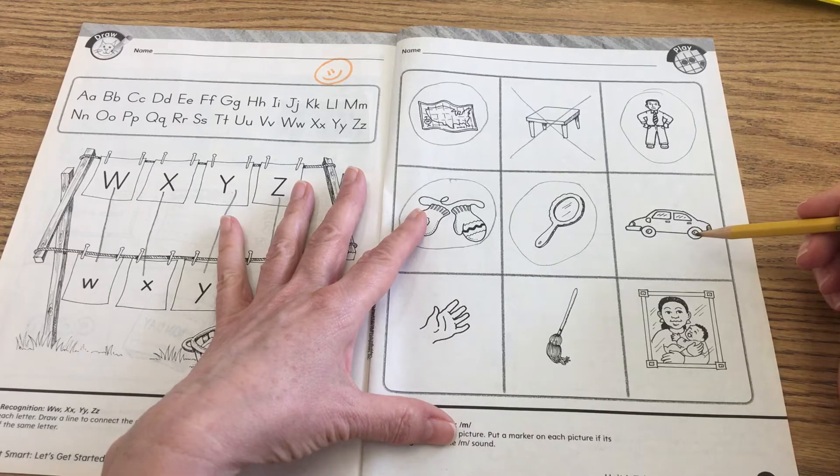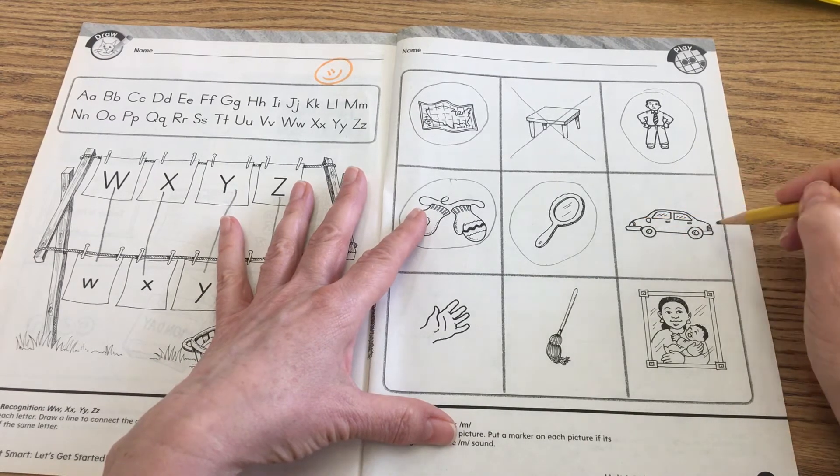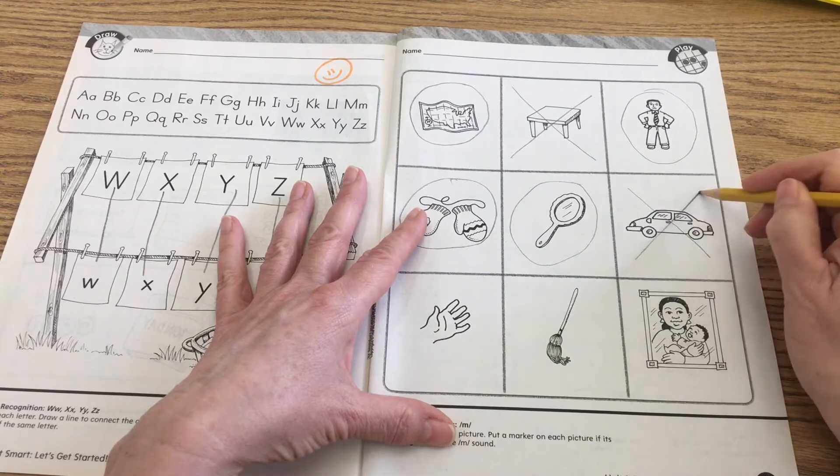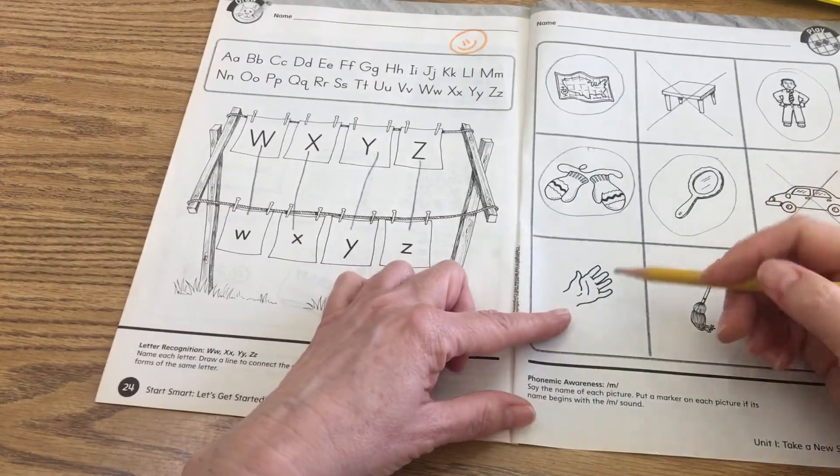Say car. Car. That begins with a C-C-C. We don't call it a mar. Can't be monkey mar. So we're going to cross that out.